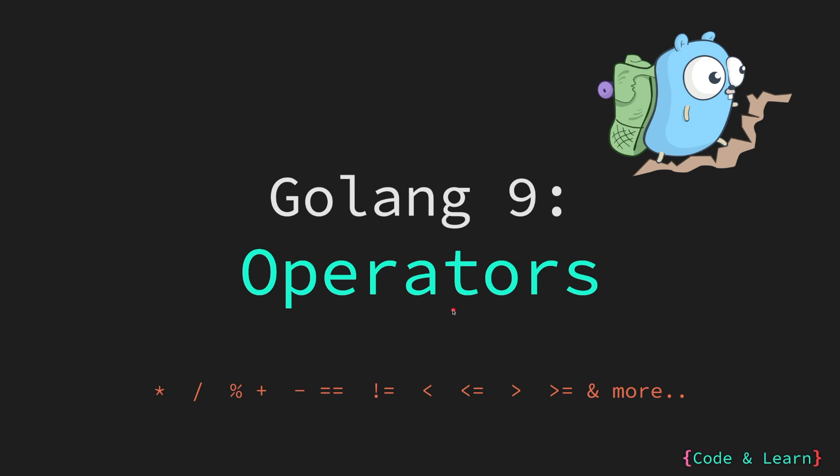Hello everyone. Welcome to lesson nine of our Golang course. It's time to introduce you to operators. We will cover different kinds of operators available in Go and how they are used. Some of them we have already used in our examples, like the assignment operator and the colon-equal short-hand used for assignment. There are a lot of different operators available to us and this can be overwhelming at first, but don't worry — this is just a broad introduction to operators in Go. Throughout the course, we will cover each kind in depth when appropriate.